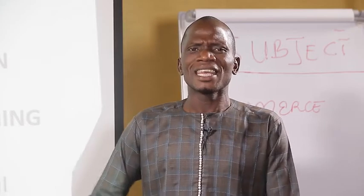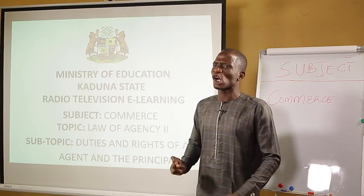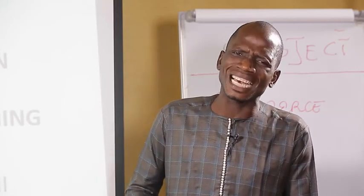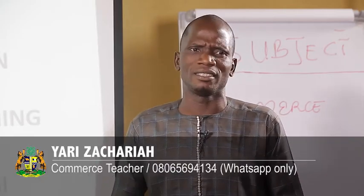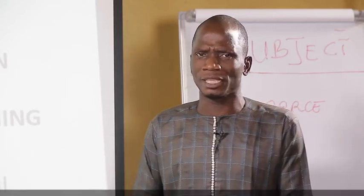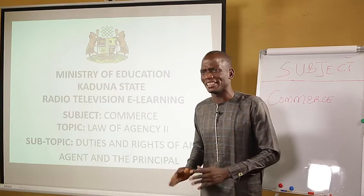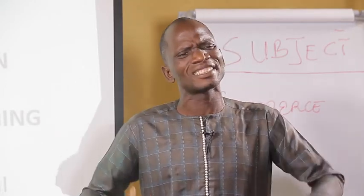We also talked about agency in our previous lesson. By agency, we define it as a legal relationship that exists between two parties, one called an agent, employed by another one called the principal, to enter into a legal relationship by bringing the principal with the third party. In this case, the relationship that exists between the agent and the principal is what we call agency.